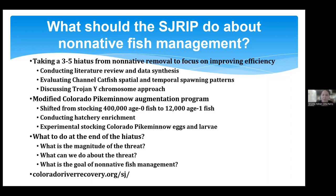A question from the chat: do you remove other species, or does the program remove them as they find them? The focus of the removal has historically been channel catfish, but any non-native fish encountered are removed. Other than common carp in the early days of the program, they occasionally catch smallmouth bass, bluegill, and largemouth bass. There are lots of small-bodied non-native fish out there that we're not effective at capturing with electrofishing, but when encountered those are removed from the system as well.